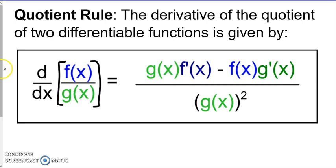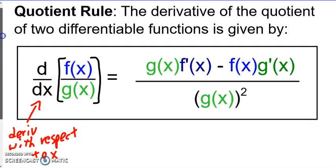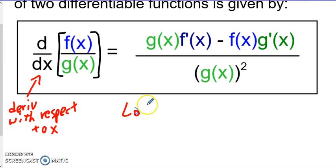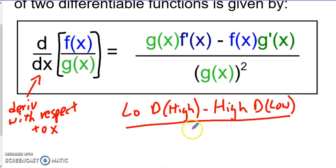Let's talk about this just a little bit in terms of our notation. The quotient rule — when you're dividing, you have a numerator and denominator, a function on the numerator and a function on the denominator. So you're taking the denominator times the derivative of the numerator, minus the numerator times the derivative of the denominator, over the denominator squared. A common phrase we use is: low d high minus high d low over low squared.